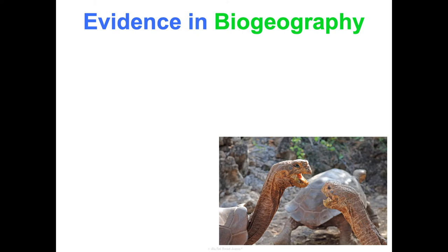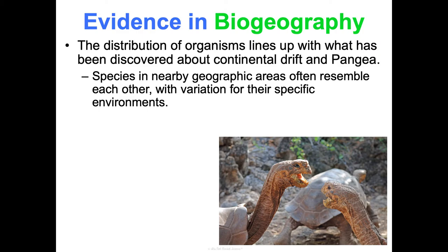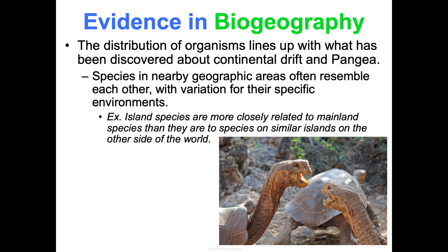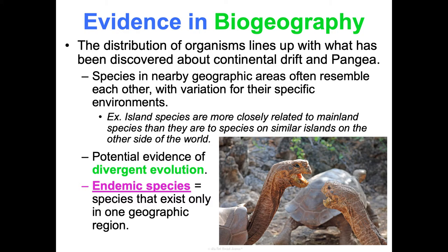Next we look at biogeography for evidence — the study of where living things are located. This is what Darwin was examining on the Galapagos Islands when analyzing the tortoises. Looking at the distribution of organisms, the way they're lined up really aligns with what we now know about continental drift and Pangaea. Species in nearby geographic areas often resemble each other, with variation for their specific environment. Island species are more closely related to nearby mainland species than to species on similar islands on the other side of the world. Endemic species — species that exist in only one geographic region, like the Galapagos tortoises — also provide evidence of divergent evolution.